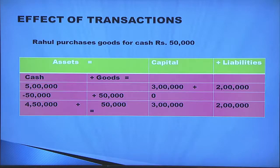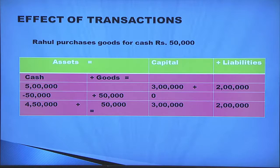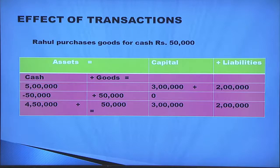Next transaction: Rahul purchases goods for cash rupees 50,000. Goods are coming inside the business for rupees 50,000, so under the goods column — included under assets — rupees 50,000 is increased. Goods are purchased for cash, so cash is going from the business: minus 50,000 in the cash column. The new accounting equation is cash four lakh 50,000 plus goods 50,000 equals capital three lakh plus liabilities two lakh.